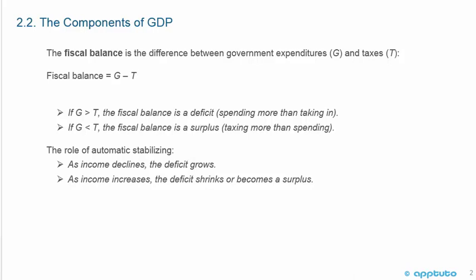The fiscal balance is the difference between government expenditures G and taxes T. So the fiscal balance equals G minus T. If G is greater than T, the fiscal balance is a deficit — they're spending more than they're taking in. If G is less than T, the fiscal balance is a surplus — they're taxing more than spending.